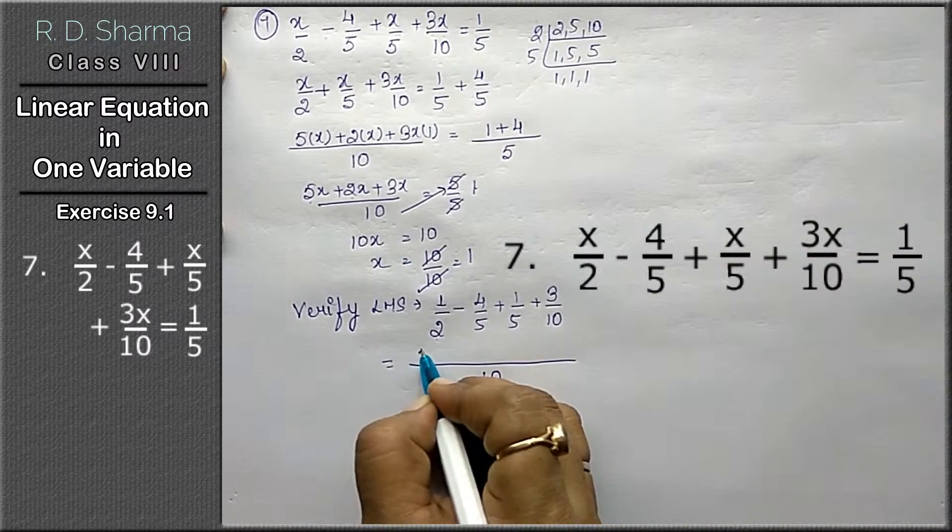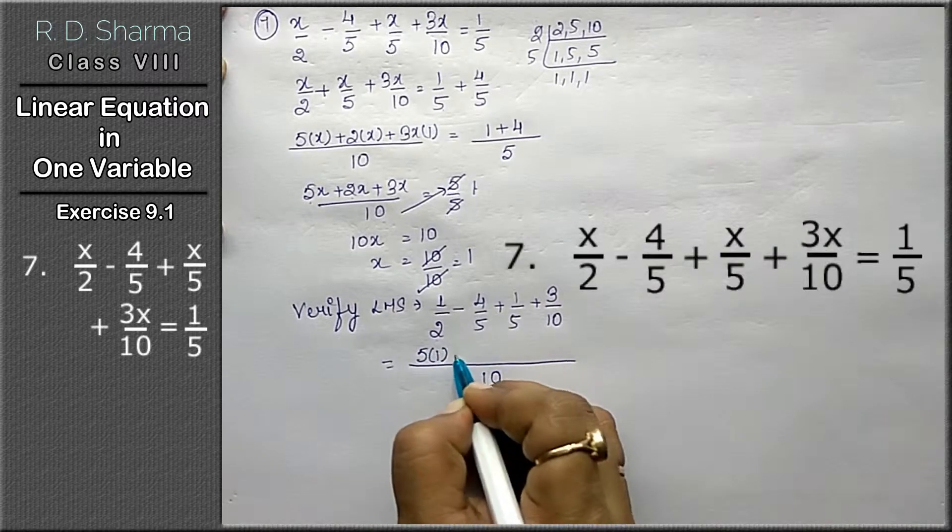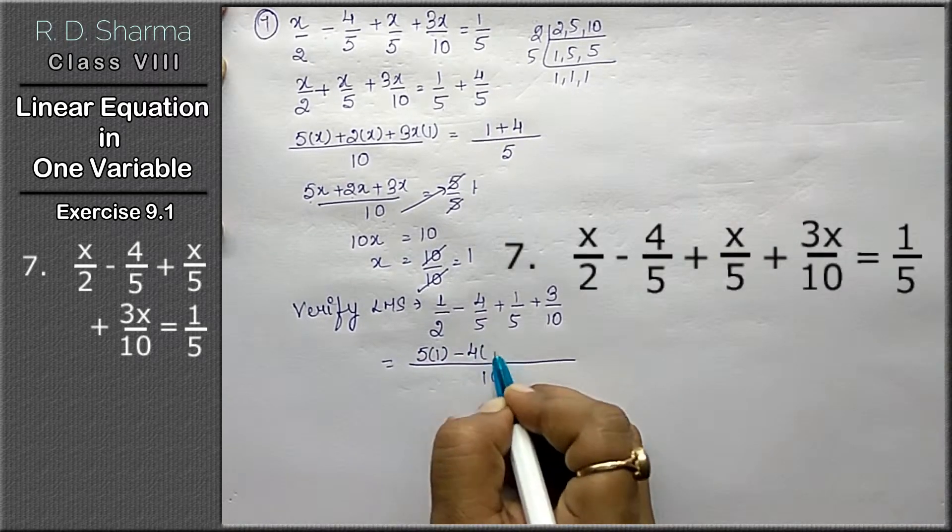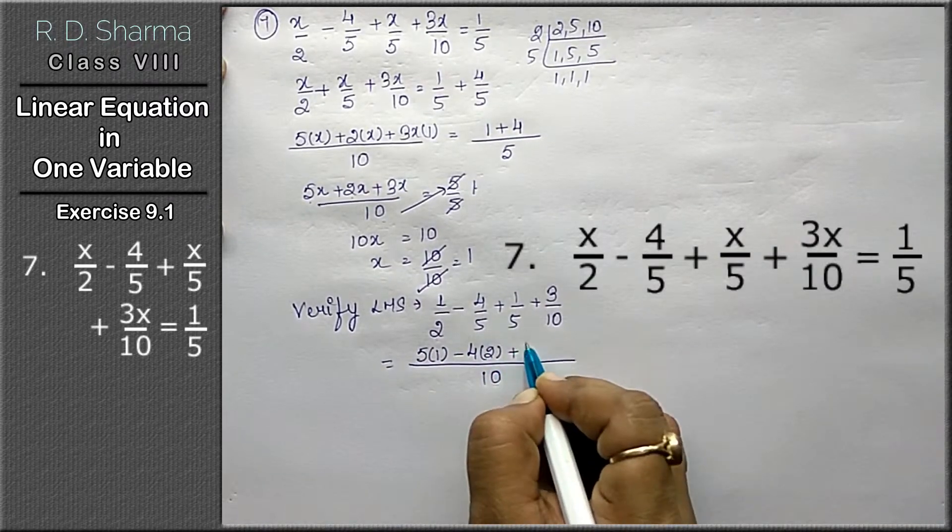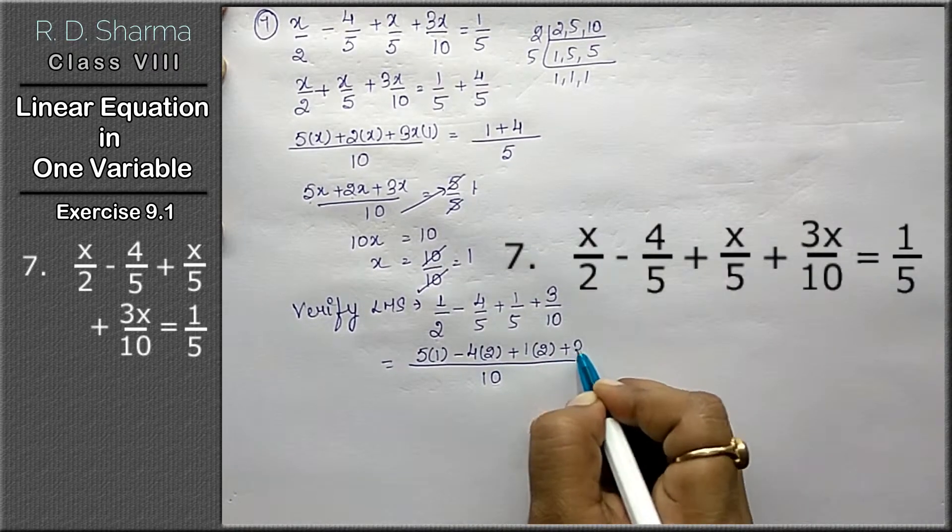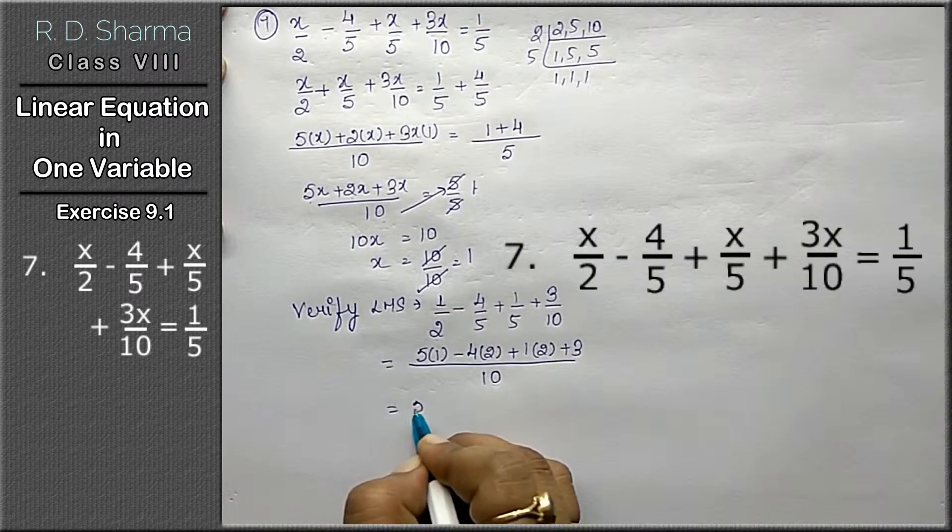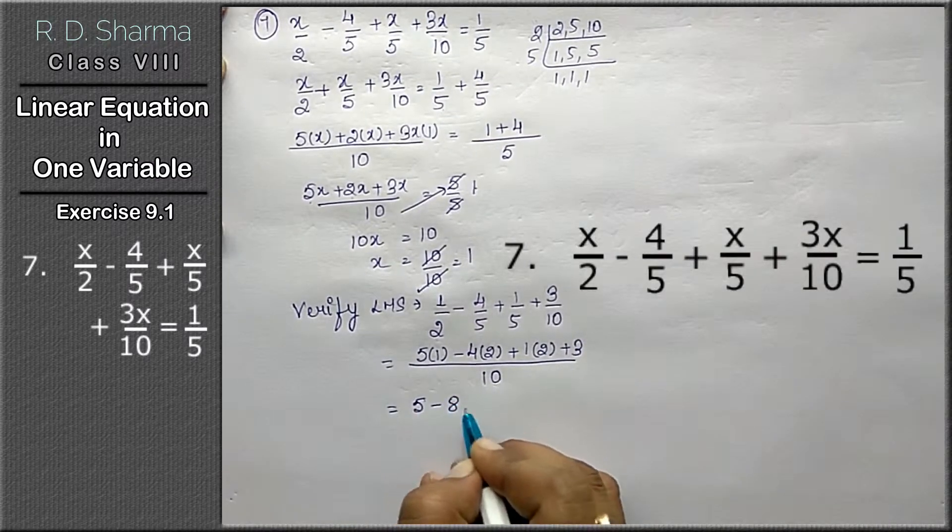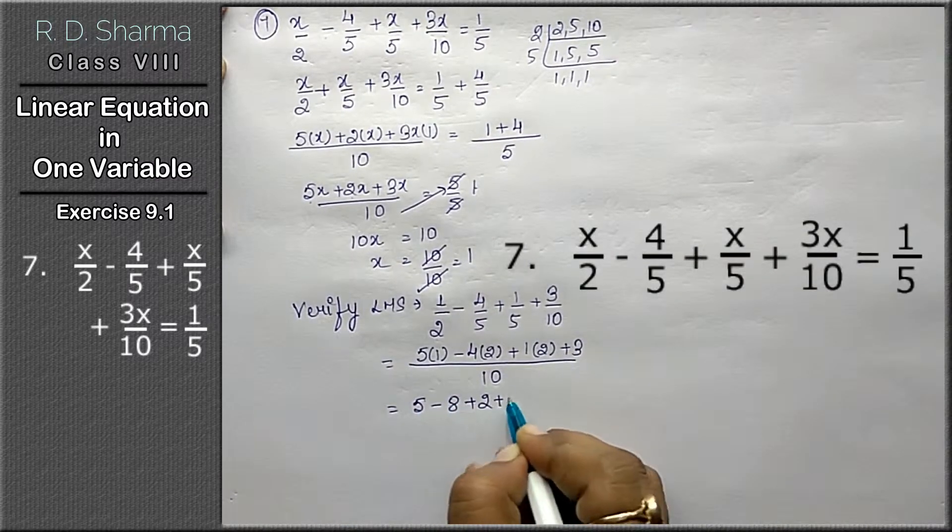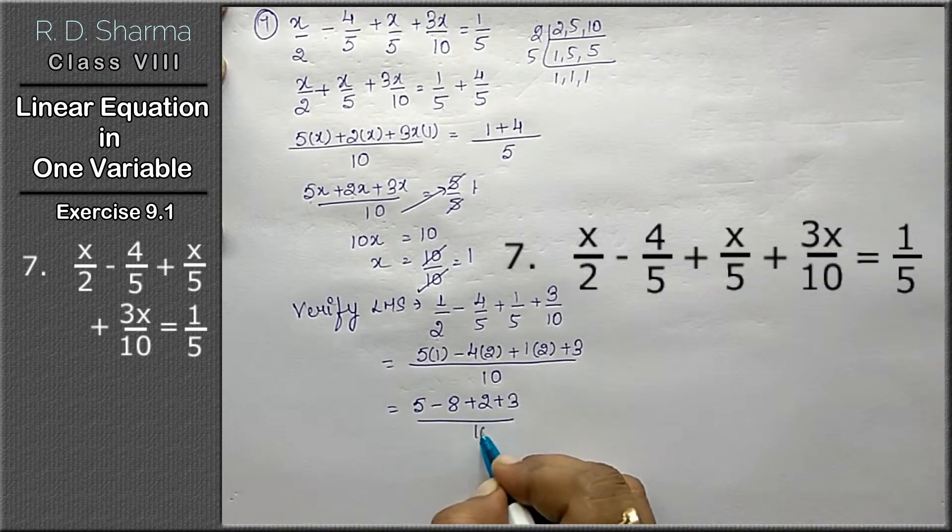1 will get multiplied by 5, minus 4 will get multiplied by 2, plus 1 will get multiplied by 2, plus 3 as it is. Now 5 times 1 is 5, minus 4 times 2 is 8, plus 2, plus 3, all upon 10.